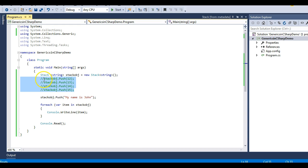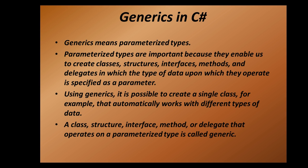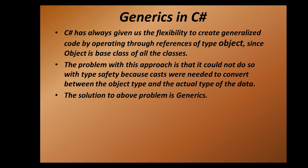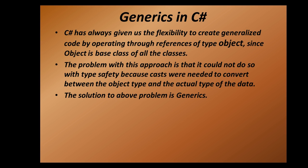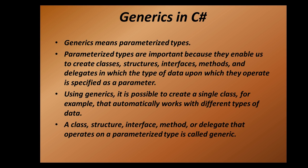This is a simple example demonstrating generics. Let's move back to our slides. All four points emphasize the importance of generics. The third point says: using generics, it is possible to create a single class that automatically works with different types of data. C# has always given us the flexibility to create generalized code by operating through a reference of type object — but that is not type safe. The solution to that problem is generics. We can also create a stack of complex data types with generics.